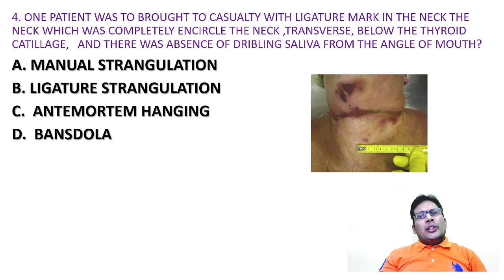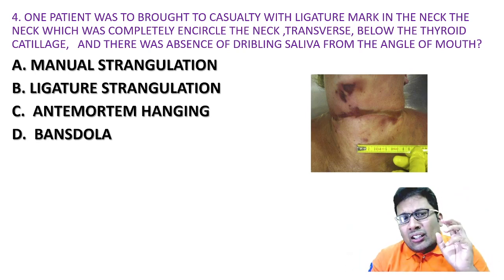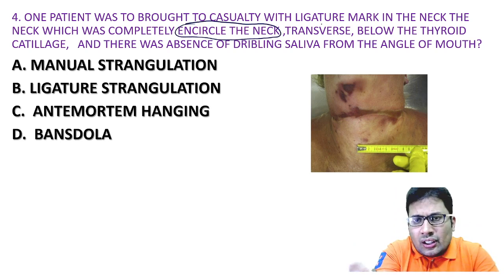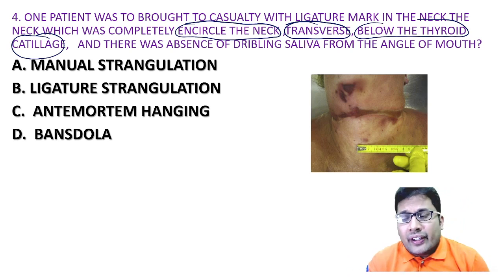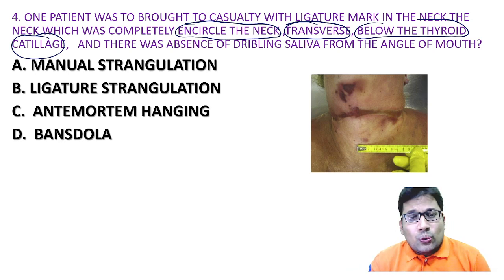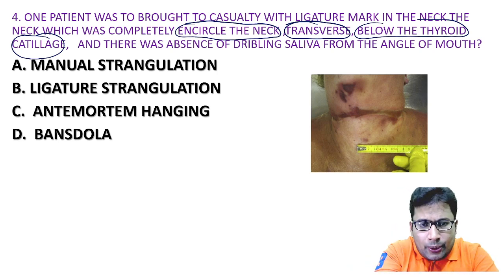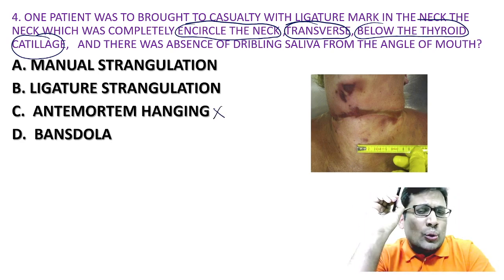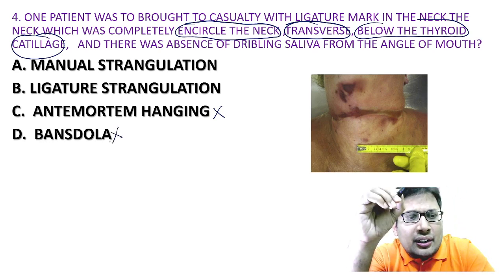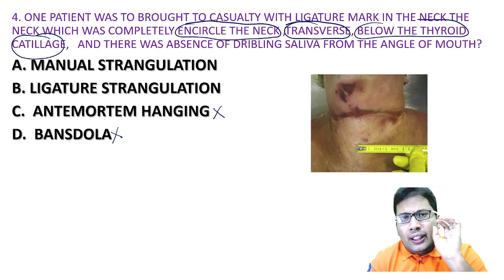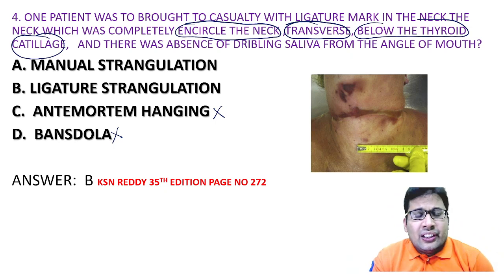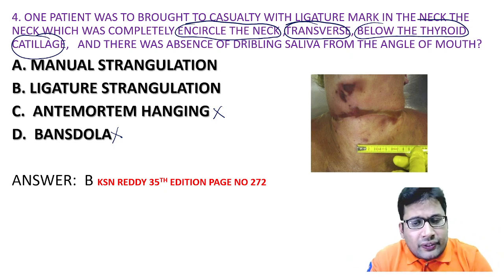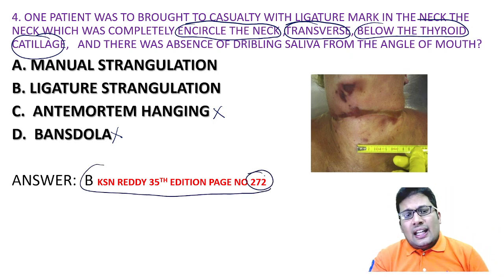Fourth question: a patient was brought to casualty with a ligature mark in the neck completely encircling the neck, transverse below the thyroid cartilage, with absence of dribbling of saliva from the angle of mouth. Options are manual strangulation, ligature strangulation, antemortem hanging, and bansdola. Dribbling of saliva is present in antemortem hanging, so that is ruled out. Bansdola occurs at the elbow or knee bend, so that is ruled out. The correct answer is B — ligature strangulation, according to KSN Reddy, 35th edition, page 272.